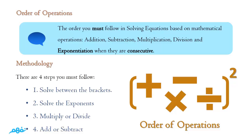What is the methodology of this order? There are four main steps you must follow. First, solve what is inside brackets. Second, solve the exponents or powers. Third, multiply or divide. And last, add or subtract. Note that multiplication and division have the same priority, and addition and subtraction also have the same priority — both are equally important.